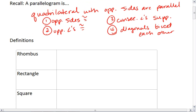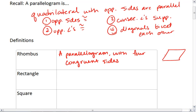A rhombus is a parallelogram where opposite sides are parallel, but all four sides are congruent. It's an equilateral parallelogram.